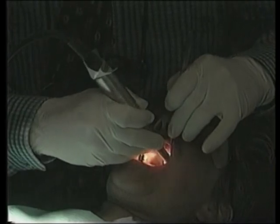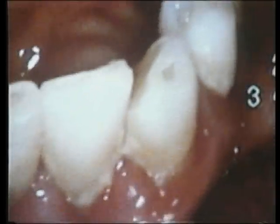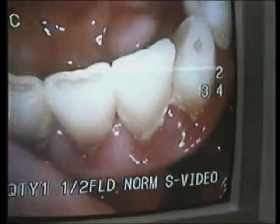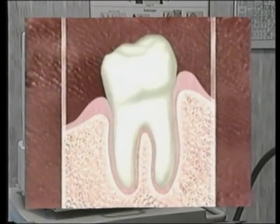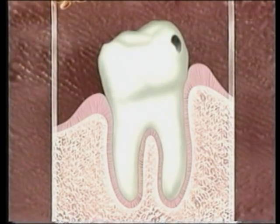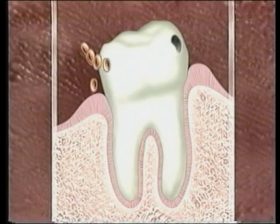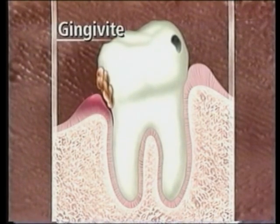When such is the case, periodontal diseases — those of the gums — appear. They are very widespread, attacking 60% of the population. The tooth is a prey of choice for bad bacteria. There are those which cause cavities, but there are numerous others which attack the gingiva. First, a plaque is formed on the tooth. Then these bacteria attack the gums and cause redness and inflammation — it's gingivitis.